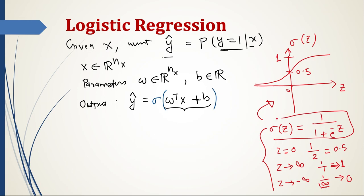So sigmoid can never take a value outside 0 and 1 — our job is done, as we needed a value between 0 and 1. In order to estimate the parameters w and b for logistic regression, such that y-hat becomes a good estimate of the actual probability of y being equal to 1, we need to define a cost function. In the next video we will see a cost function for logistic regression.